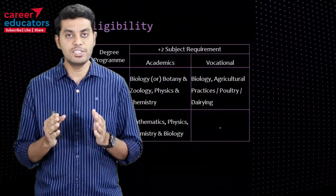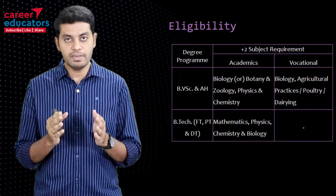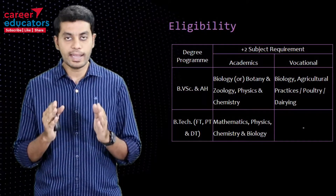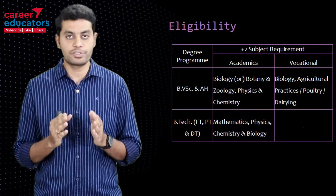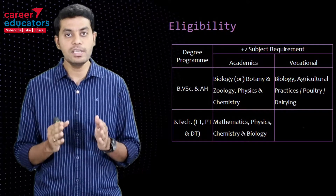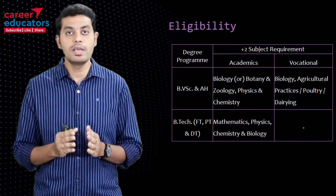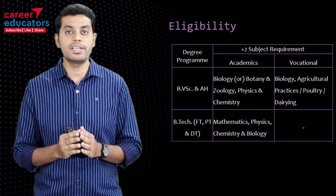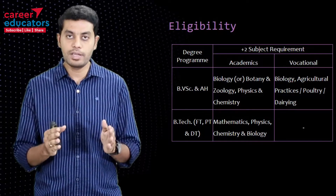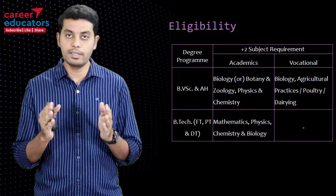Next, we will see the eligibility criteria. If you apply for BVSE, you will need the first group academic stream, which means biology, physics, and chemistry. Alternatively for BVSE, you can have biology, agriculture, poultry, or dairy.